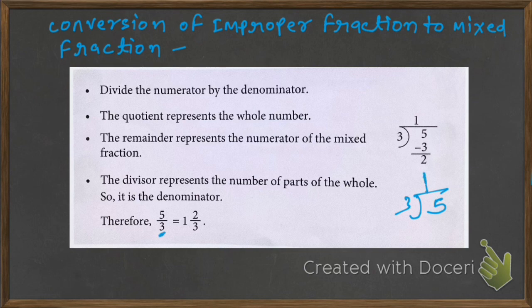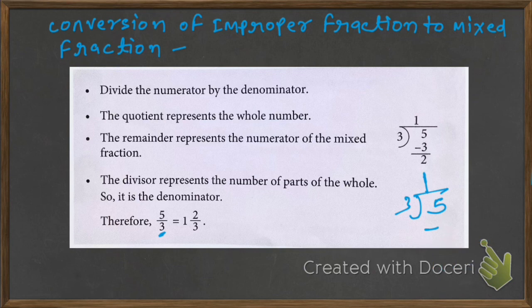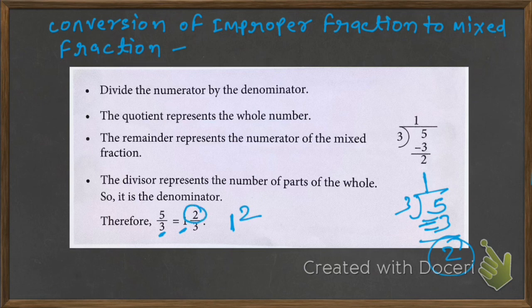How many times? 1 time. 1 times 3 is 3, then 2 is remaining. So 2 is the remainder. We cannot divide 2 by 3. So we write 1 as the whole number. The number that is the remainder becomes the numerator of this fraction, and this 3 is the denominator of this fraction.